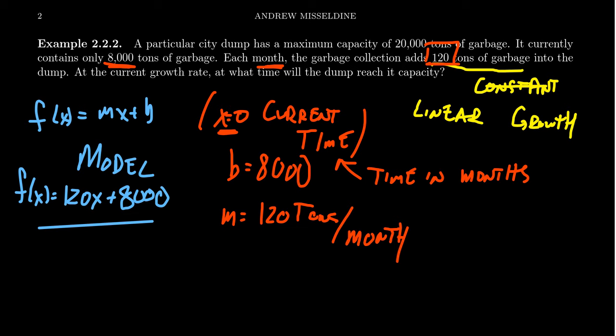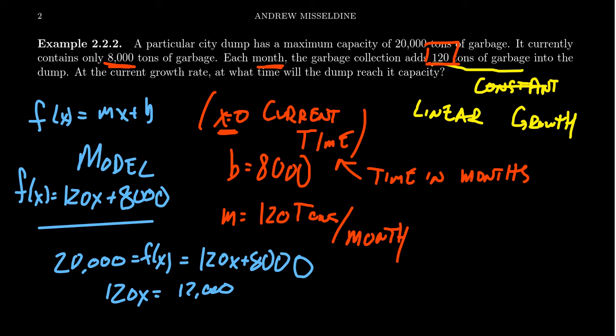The capacity is 20,000. So we then set this equal to 20,000. F(x) = 20,000. We want to solve for x. So we get 120x + 8,000, and then we proceed to solve this equation. Subtract 8,000 from both sides. We see that 120x is going to equal 12,000. And then divide both sides by 120. We're going to get that x = 100.